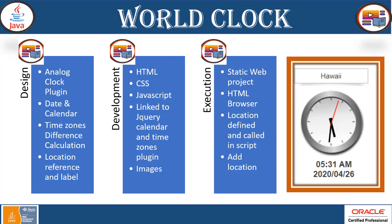Different types of time zones and their calculation. When it comes to the world clock, all the different countries have their different time zones. Based on that, we need to calculate and display that time and add it in your analog clock. The type of information has to be included in this project. Location reference and label — based on this reference, the labeled country, we are showing the time. This is how this kind of clock will look and feel, and these are the requirements we need to implement in this project.